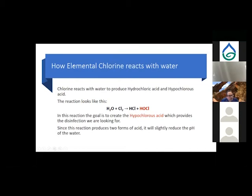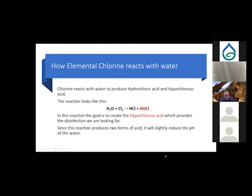When elemental chlorine reacts with water, it produces hydrochloric acid and hypochlorous acid. Both products on the back side of this equation are acids — hydrochloric is a strong acid, hypochlorous is a weak acid. The hypochlorous acid is what we depend on to actually disinfect our water system. Since the reaction produces two forms of acid, it will slightly reduce the pH — driving it lower.